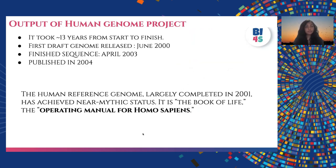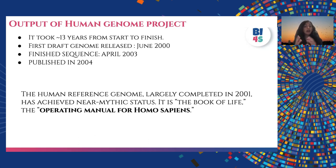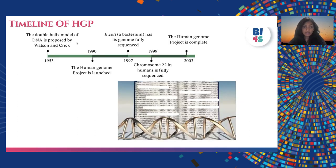The output of the Human Genome Project: it took around 13 years from start to finish. The first draft genome was released in June 2000, the finished sequence in April 2003, and published in 2004 for researchers. The human reference genome is largely completed and has become like the operating manual of Homo sapiens. Key timeline: 1953 — double helix model proposed by Watson and Crick; 1990 — HGP launched; 1997 — E. coli genome fully sequenced; 1999 — chromosome 22 fully sequenced; 2003 — HGP complete.